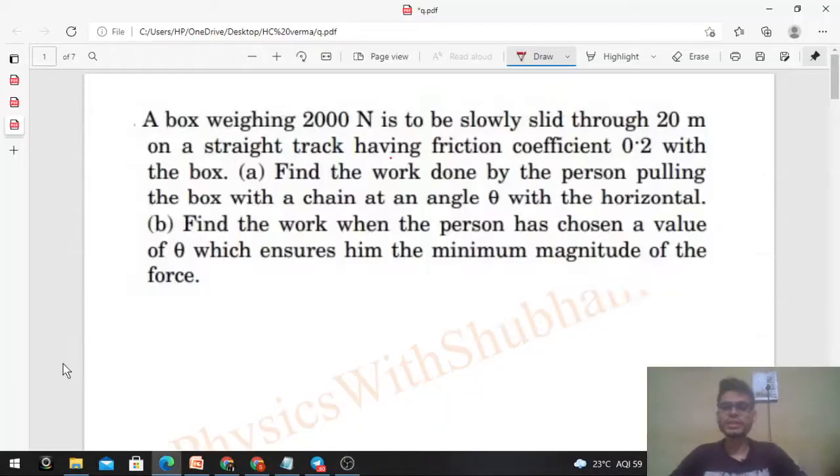Okay, hi everyone. Today let's discuss this interesting problem. It says a box weighing 2000 Newton is to be slowly slid through 20 meters on a straight track having friction coefficient 0.2 with the box. Find the work done by the person pulling the box with a chain at an angle θ with the horizontal.